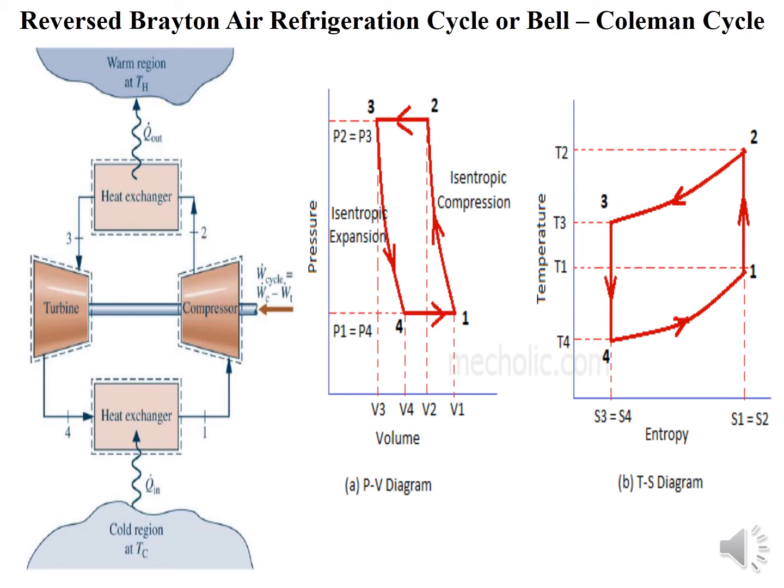Reversed Brayton air refrigeration cycle or Bell-Coleman cycle has heat exchanger, compressor, heat exchanger and turbine. Heat exchanger sucks in heat from cold region and supplies heat to the warm region. This is TH and this is TC. This is the PV diagram: 1 to 2 isentropic compression, 2 to 3 constant pressure, 3 to 4 isentropic expansion, and 4 to 1 constant pressure. Here S1 = S2 and S3 = S4.